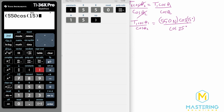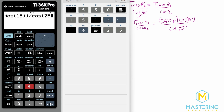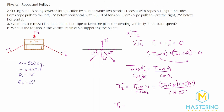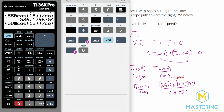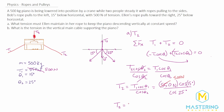I just caught a mistake — I had written 550 newtons earlier, but it should be 500 newtons. This is a good example of why you should keep a list of variables and work algebraically first: it helps catch simple errors like this. So with the corrected value, T2 equals 500 cosine 15 divided by cosine 25, which gives approximately 532 or 533 newtons — we'll round to 530 newtons for two significant figures.